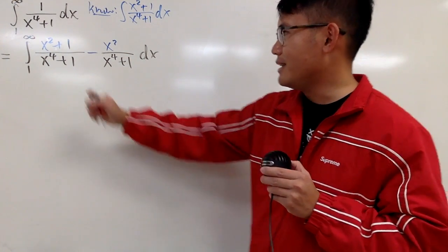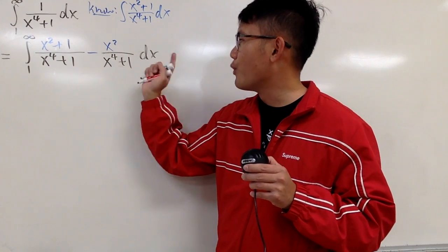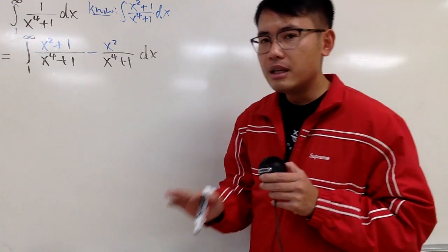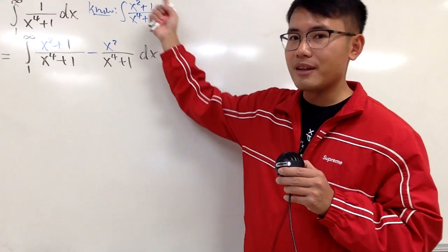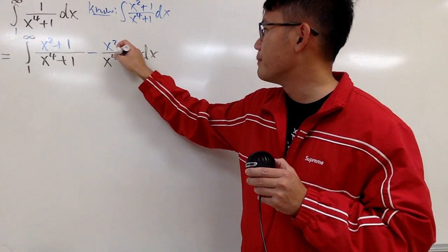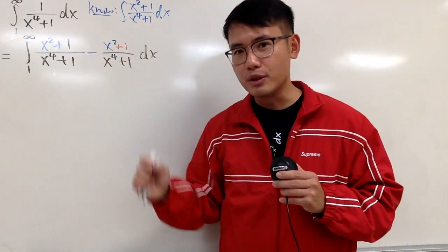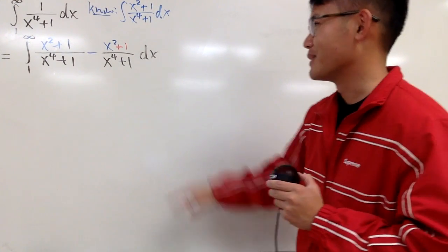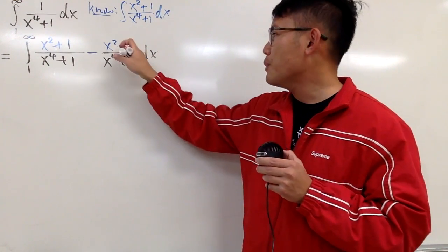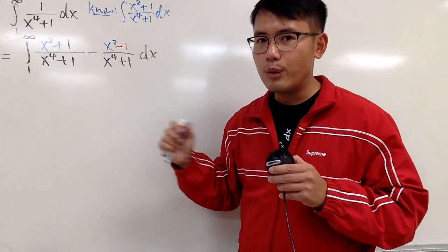To integrate just x squared over x to the 4th plus 1 is pretty difficult — almost as difficult as the original. I want to have a plus 1 in the numerator to help me out. If I just put plus 1 there, I get x squared plus 1 minus (x squared plus 1), which is just 0 — we'd be integrating 0, which is no good. So instead I'll use minus 1, giving me a minus x squared minus 1. Now the two integrals look similar and can be approached with the same strategy.